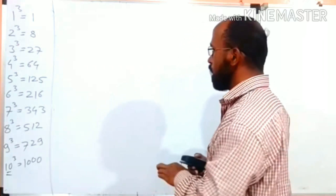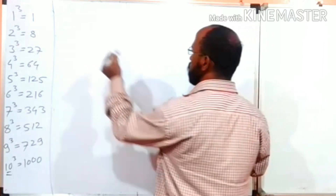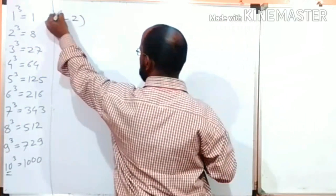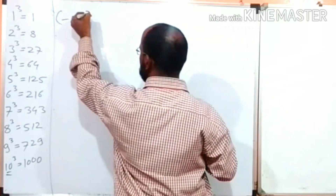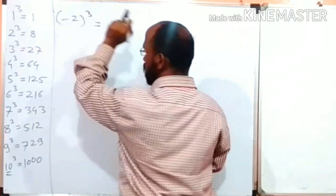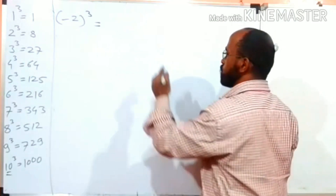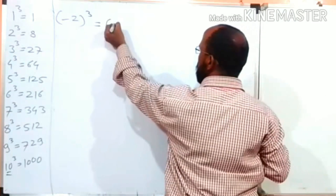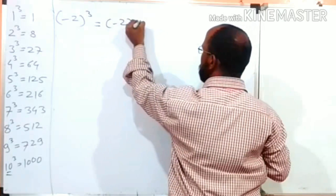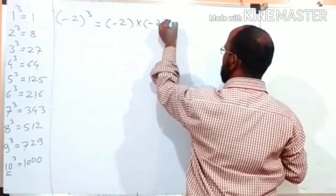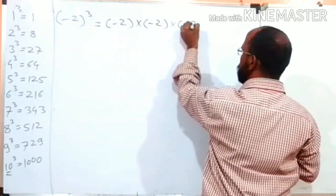Suppose I have to find out the cube of minus 2. So, the cube of minus 2 is equal to minus 2 multiplied by minus 2 multiplied by minus 2.